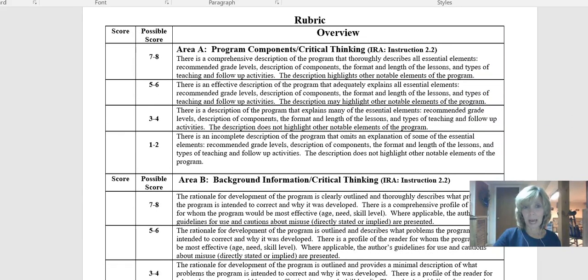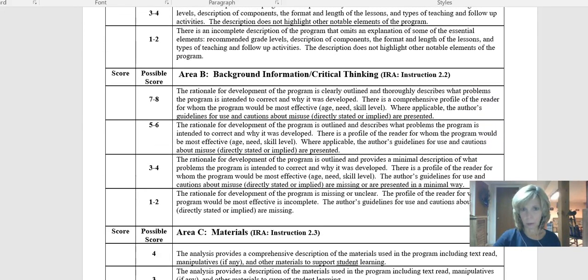Your area A, the first part, you're going to give your comprehensive description of the program and you're going to describe the appropriate grade levels, the format, the length of the lessons, the types of the teaching, and any of those other notable elements. Area B, you're going to give the background on the program. What is the program intended to do and why was it developed? What's the profile of the appropriate reader for this program? And this is where that author's guidelines for use and misuse might come in.